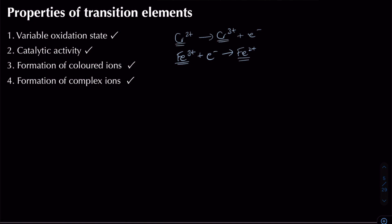Second, transition elements can act as catalysts. In the Haber process — N2 + 3H2 → 2NH3 — an iron catalyst is used. They work by adsorption, where iron holds molecules of nitrogen against molecules of hydrogen, causing them to fuse together and lowering the activation energy.